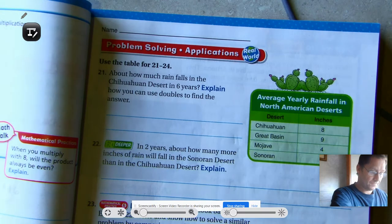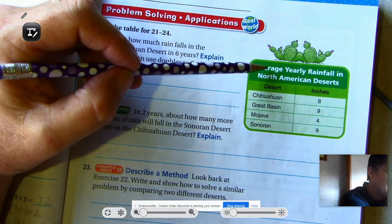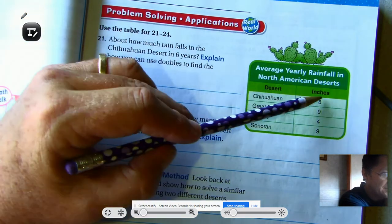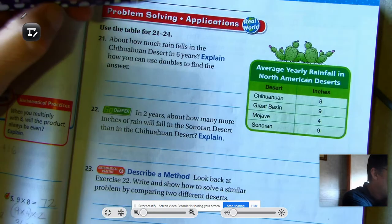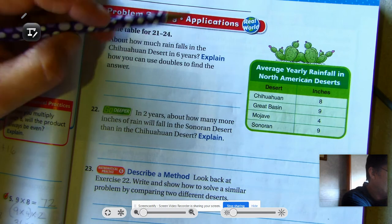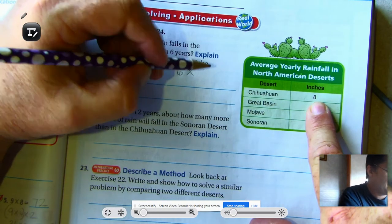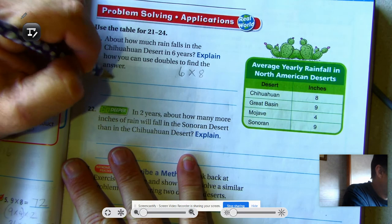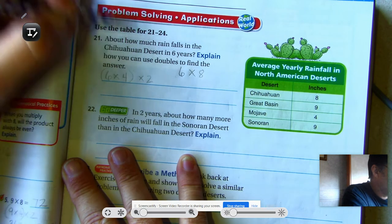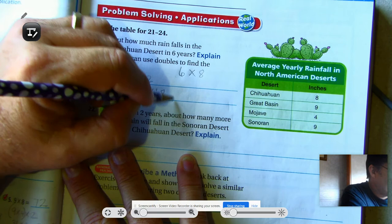Okay, 21. On page 171. Use the table for 21 through 24. So let's look at our table. It says the average yearly rainfall in North American deserts. And we have four deserts. And this is the amount of rain in each of those deserts. Alright. So about how much rain falls in the Chihuahuan desert in six years? Explain how you can use doubles to find the answer. So we'd have six years, every year, eight inches. So it would be six times four, doubled. So 24, that's 24, 48 inches.